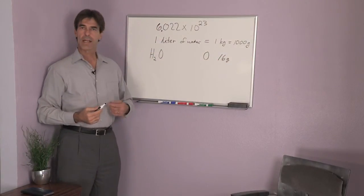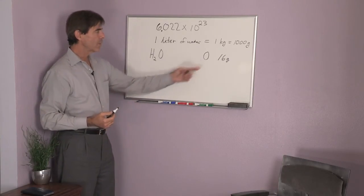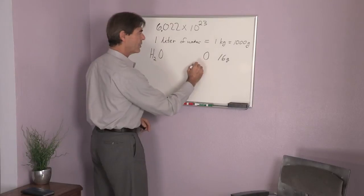Hydrogen has the atomic weight of one. That means we would have, since we have two of them, two moles of hydrogen would have two grams of mass.